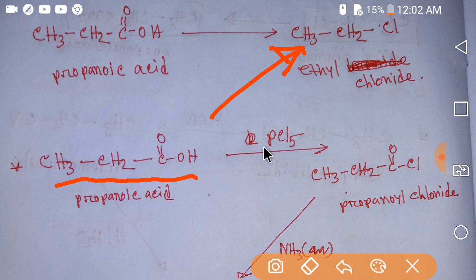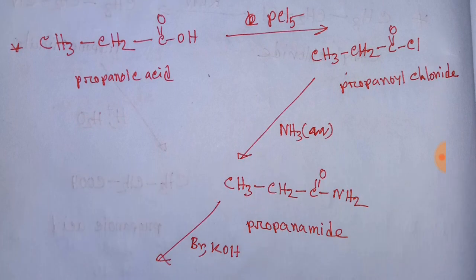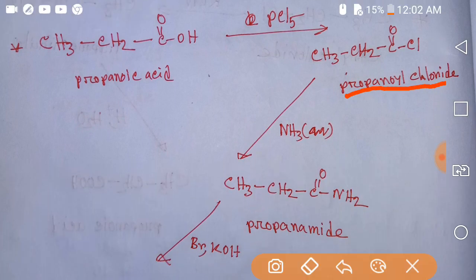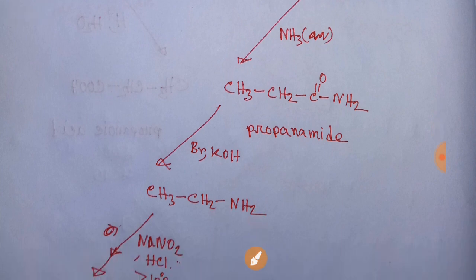If we add PCl5 (phosphorus pentachloride), the OH group will be replaced by chlorine and we get acyl chloride. This is propanoic acid reacting to form propanoyl chloride. Then propanoyl chloride reacts with aqueous ammonia, and the chlorine will be replaced by an amino group, giving propanamide. This is the mother compound to decrease the number of carbons in a chain.